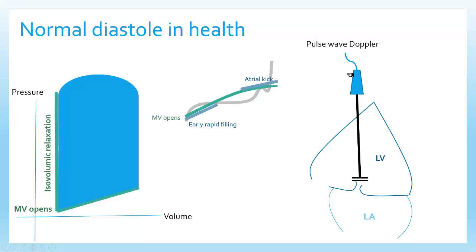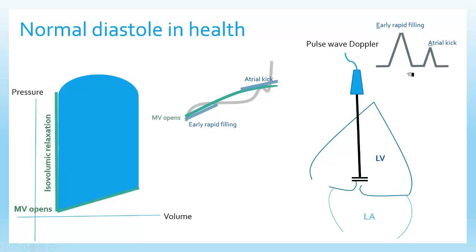When measuring pulse wave Doppler, you'll pick up exactly what you see here: early rapid filling, which is your E wave (conveniently labeled E), and then your atrial kick, which is your A wave. Your E is your early rapid filling; your A is your atrial kick. That's pulse wave Doppler measuring blood flow from left atrium to left ventricle, occurring in two big waves — early rapid filling and an atrial kick.